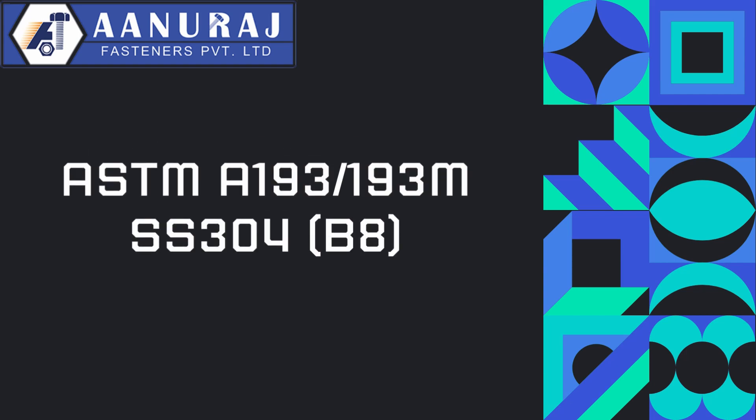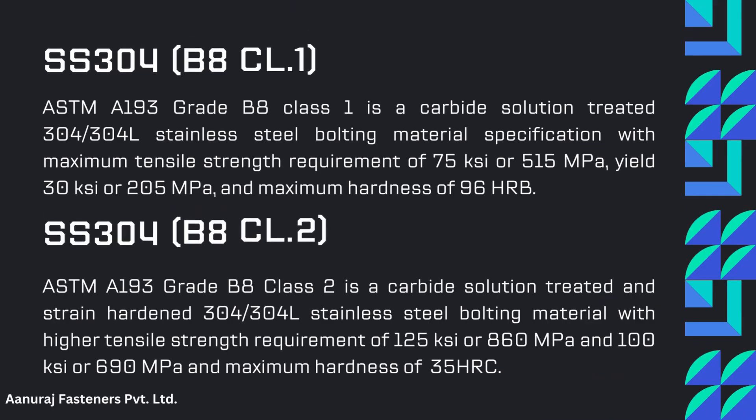ASTM A193 Grade B8 SS304 — ASTM A193 Grade B8 Class 1 is a carbide solution treated 304/304L stainless steel bolting material specification with a maximum tensile strength requirement of 125 MPa, yield of 30 KSI or 205 MPa, and a maximum hardness.